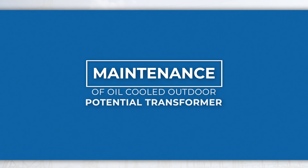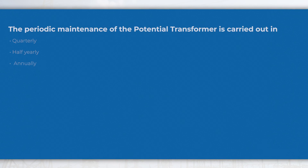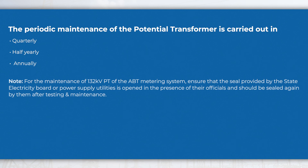Maintenance of potential transformer: The periodic maintenance of the potential transformer is carried out quarterly, half-yearly, and annually.